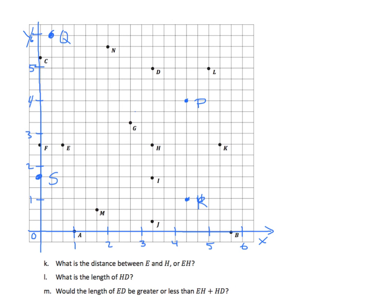On to tasks 2K, L, and M. What is the distance between E and H? We count by 1-thirds: 1-third, 2-thirds, 3-thirds, 4-thirds, 5-thirds, 6-thirds, 7-thirds, 8-thirds. That is 8-thirds, or as a mixed number, 2 and 2-thirds. What is the length of HD? Going from H to D: 1-third, 2-thirds, 3-thirds, 4-thirds, 5-thirds, 6-thirds, 7-thirds. That is 7-thirds, which is the same as 2 and 1-third.